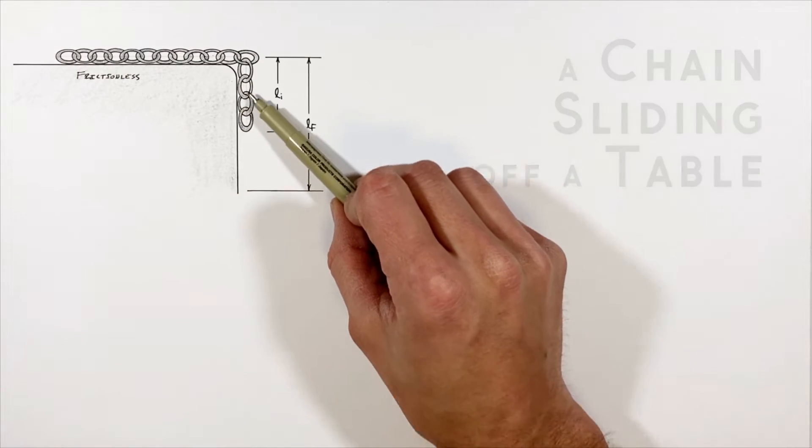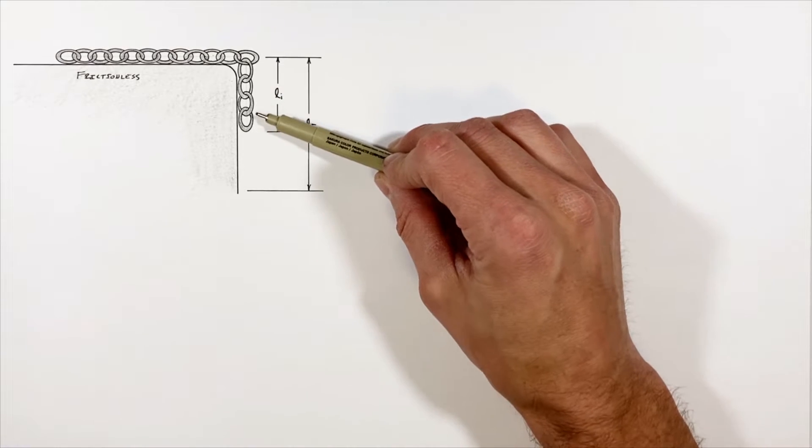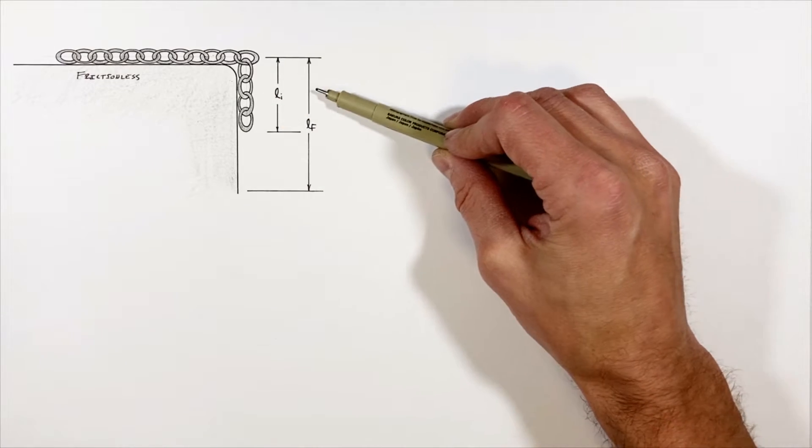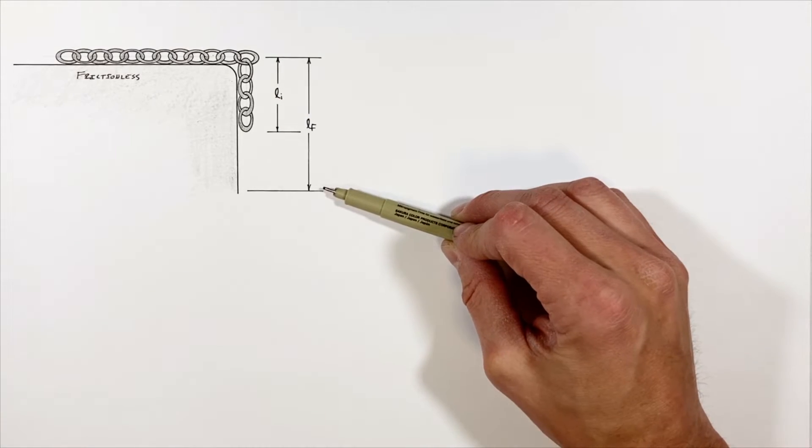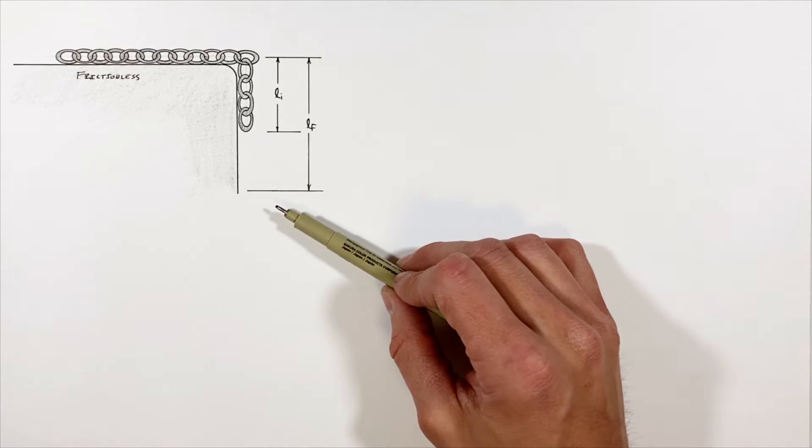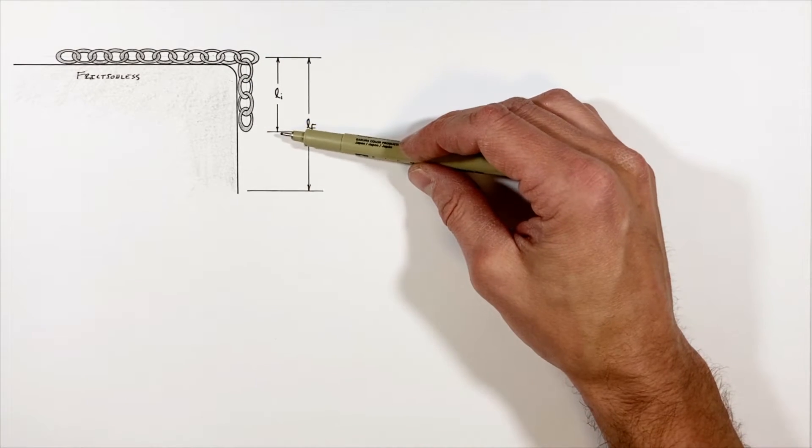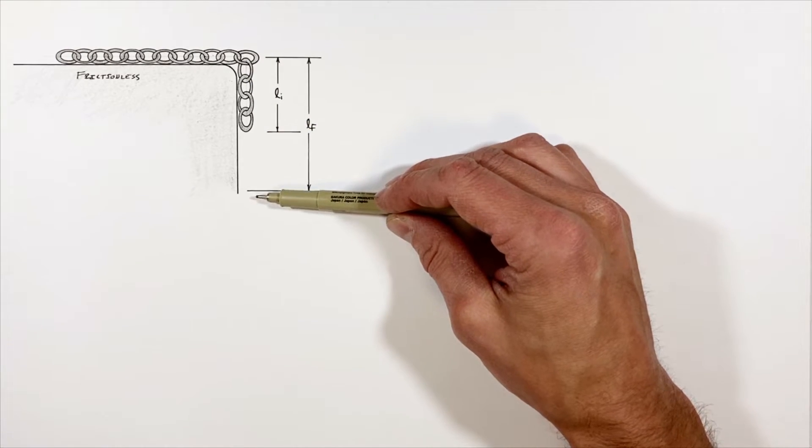All right, here we've got a chain which is hanging off the edge of a table. This chain initially has some length Li hanging off the edge of the table, and it's going to slide until some length of chain Lf is hanging off the edge of the table. What we're going to do in this problem is solve for the velocity or the speed of the chain after it's slid down this edge of the table.